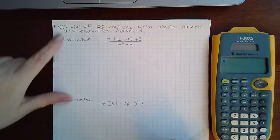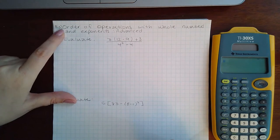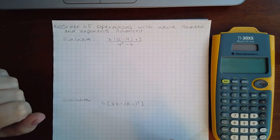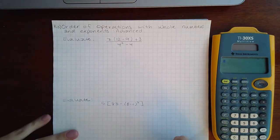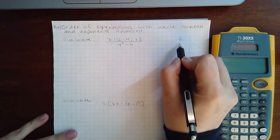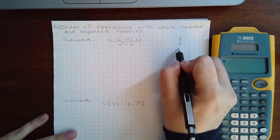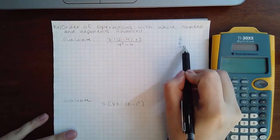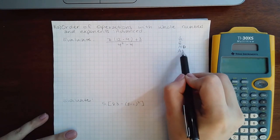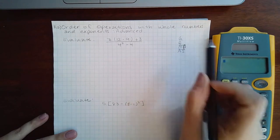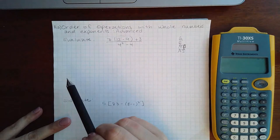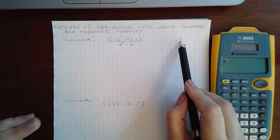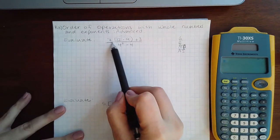Okay, here we are with Chapter R, Section 3: Order of Operations with Whole Numbers and Exponents, advanced version. Again, I'm going to do the short notation for my order of operations. So grouping mechanism - I do have a grouping mechanism, and I also have the second grouping mechanism, and that's this fraction bar.